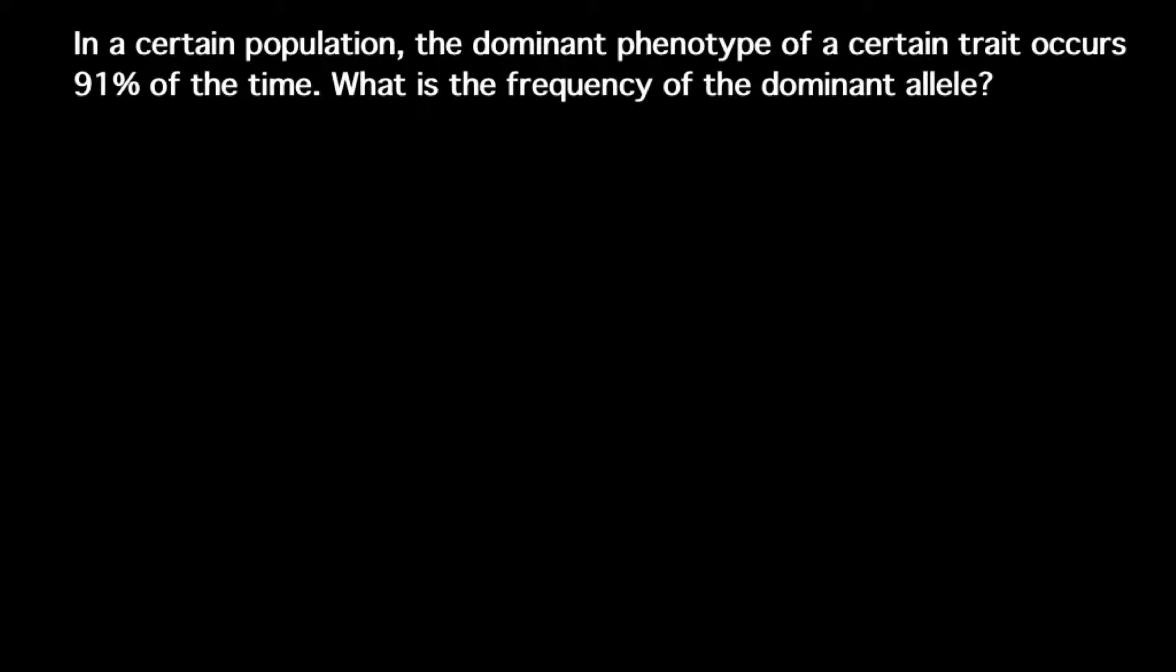In order to solve this problem, we have to know how to apply the Hardy-Weinberg formula. The frequency of genotypes and phenotypes equals p squared plus 2pq plus q squared, where p is the frequency of the dominant allele and q is the frequency of the recessive allele.